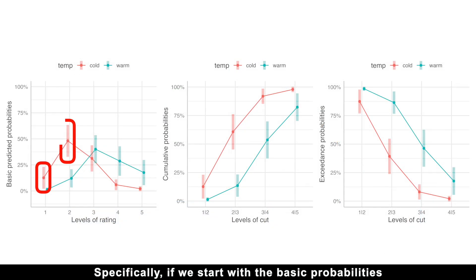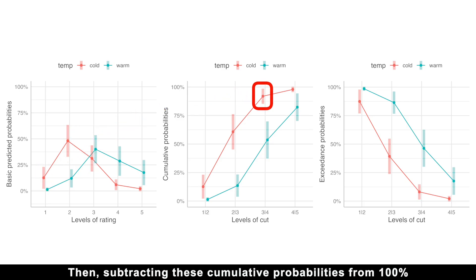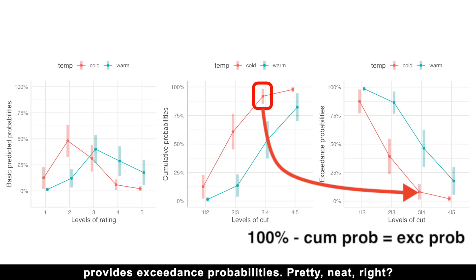Specifically, if we start with the basic probabilities for each ordered outcome, adding them gives us cumulative probabilities. Then, subtracting these cumulative probabilities from 100% provides exceedance probabilities. Pretty neat, right?